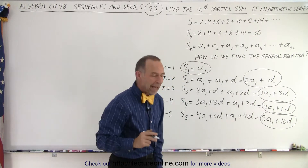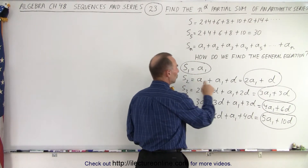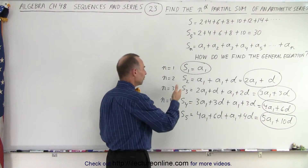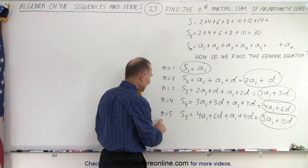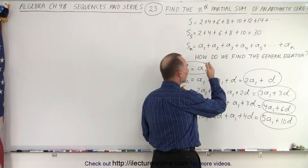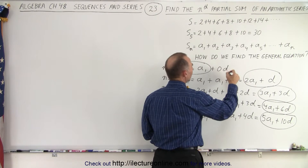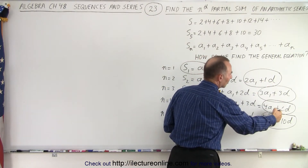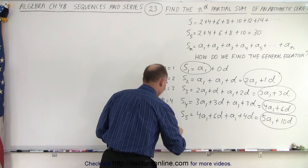So are we seeing a pattern? Yes. For S1 we have 1·a1, for S2 we have 2·a1, for S3 we have 3·a1 — so for each additional term we add one more a1, giving n·a1. For the d coefficients, we get: 0d, 1d, 3d, 6d, 10d. Let's do one more term to see where this goes.